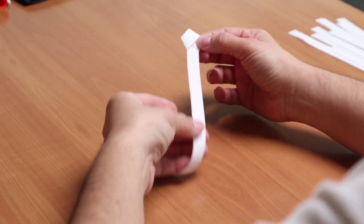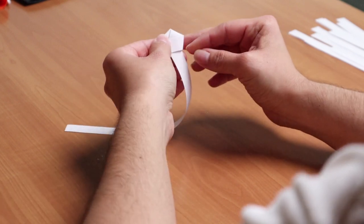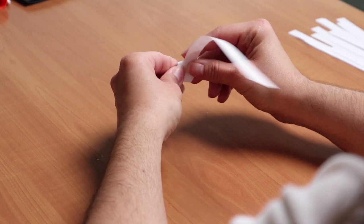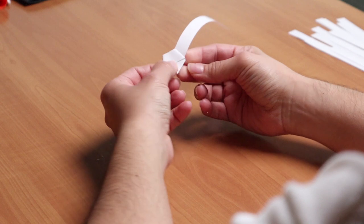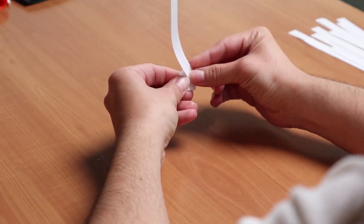Step four, wrap the other end of the strip around the pentagon that you have formed, lightly creasing as you go. If you fold too tight, the star will not puff up at the end.